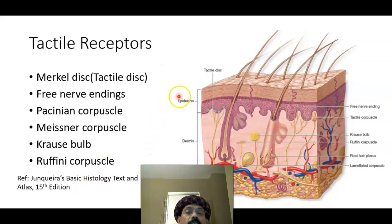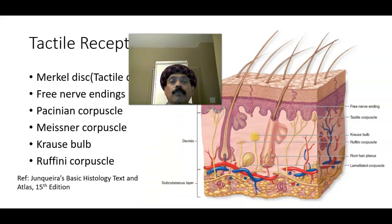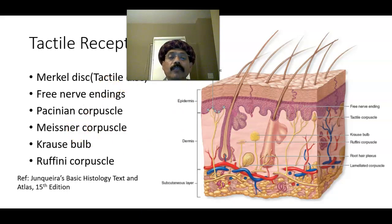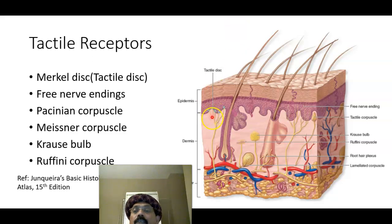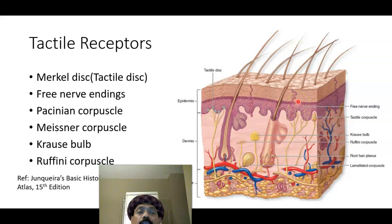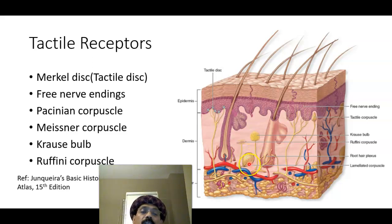We have a lot of tactile receptors. The Merkel disc is present at the basal cell layer where the nerve ending contacts the basal cell — this is the tactile disc. We also have free nerve endings where nerve fibers just penetrate through multiple layers of the epithelial cells. We have the Pacinian corpuscle, which looks like onion skin, and is associated with mechanoreceptor function — it also senses vibration.